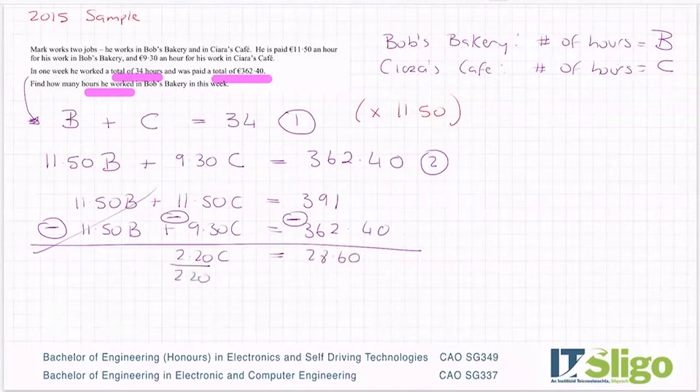Divide by the number in front of C. So divide that by 2.20. And I'm getting 13 hours.